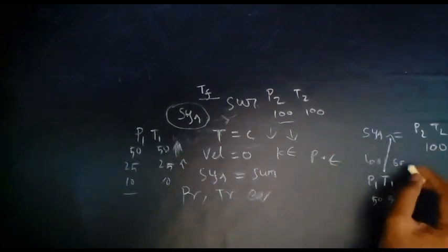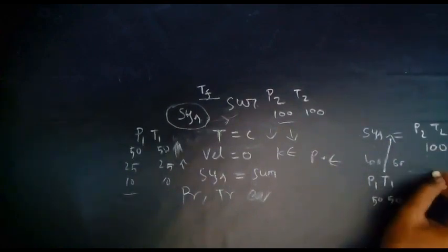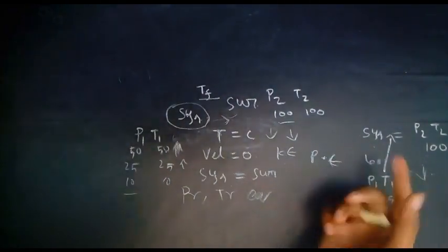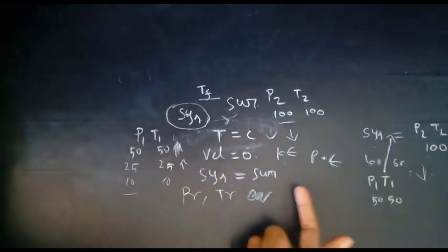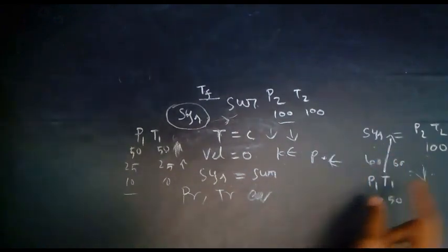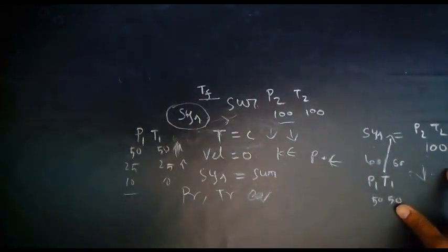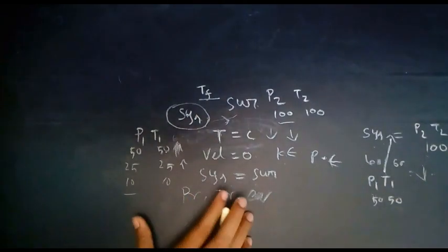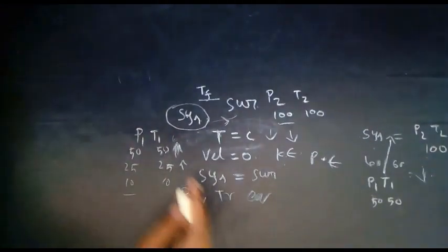When the system moves towards the surrounding, the difference keeps decreasing and availability decreases. Conversely, if the system moves away from the surrounding, the difference keeps increasing and the availability is more. So the availability is greater when the system is further from the surrounding.